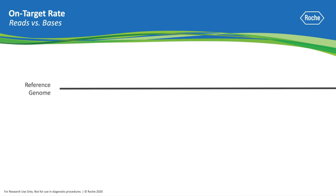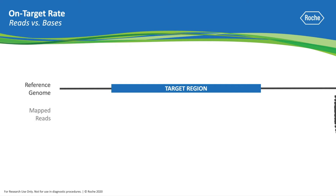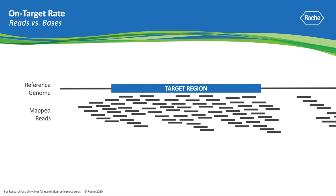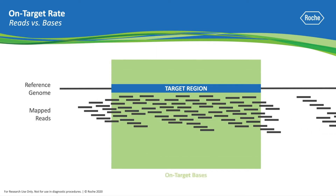In this simplified example, there is a reference genome and a target region of interest, and some mapped sequencing reads that have been aligned to the reference genome. The green rectangle highlights the bases that are considered on target. The sequencing reads that fall within the target region are shown in blue. Some reads fall on the edge of the target region and each have at least one base overlap with the target region, so these are considered on-target reads even though some of the bases fall outside of the region.